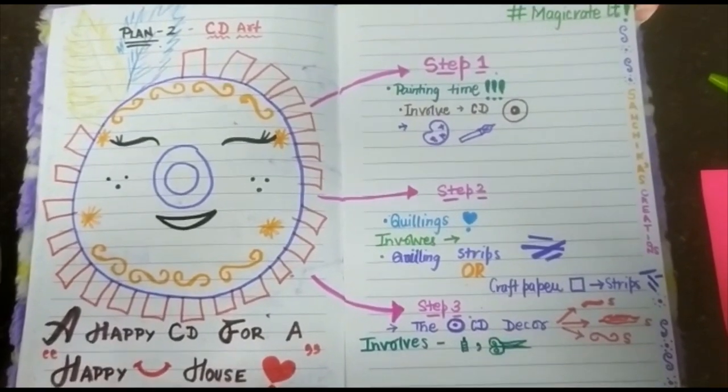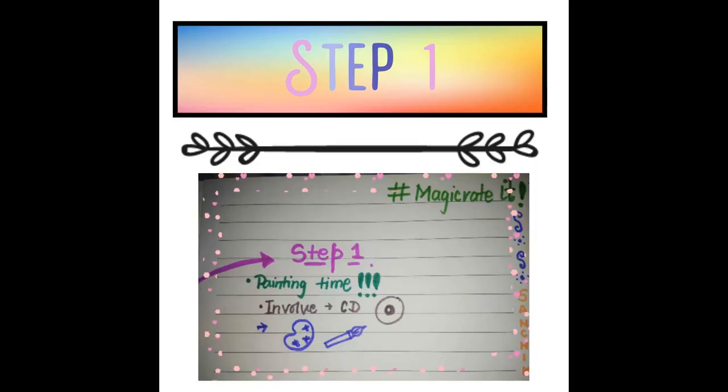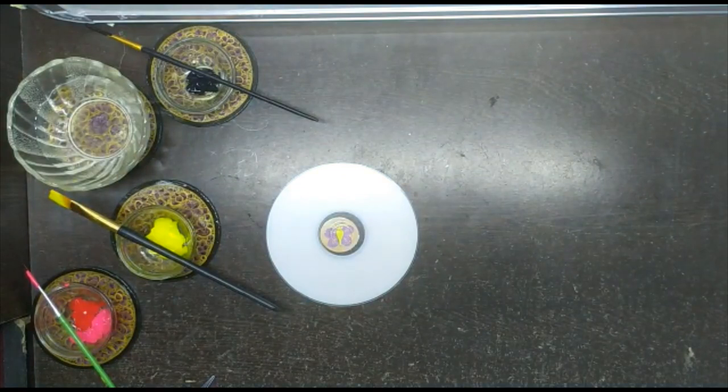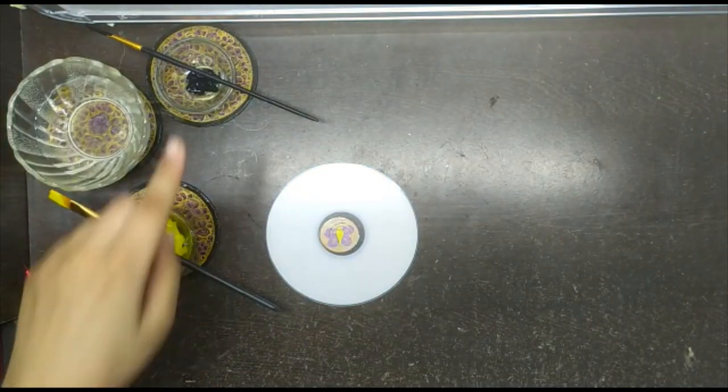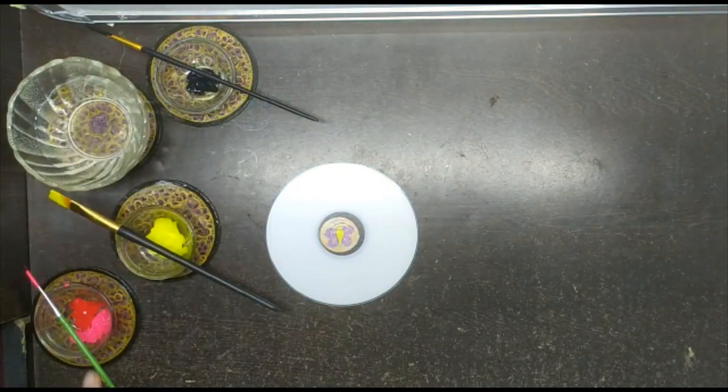So in step 1, we have to do painting. It involves CD, paint, and brushes. I have taken out black paint color, yellow paint color, red and pink paint color.